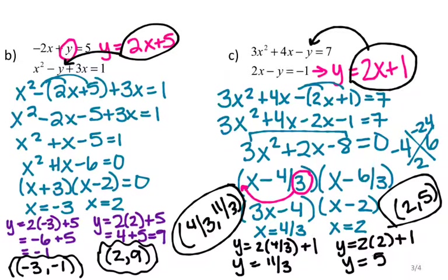This example also has two solutions for x because x was being squared, leading to two ordered pairs.